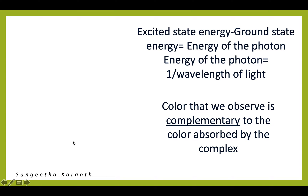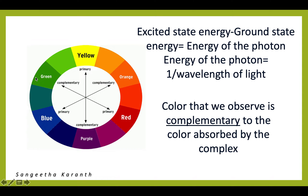Whatever color we observe is the complementary color to the color which is absorbed by the complex. For example, if the complex appears green, it indicates that the complex has actually absorbed red, because green and red are complementary to each other. Similarly, if the complex appears orange, it indicates that the complex has absorbed blue, because blue and orange are complementary colors.